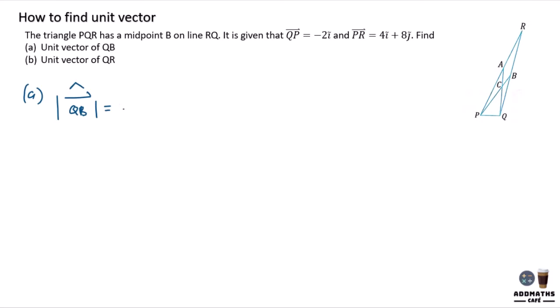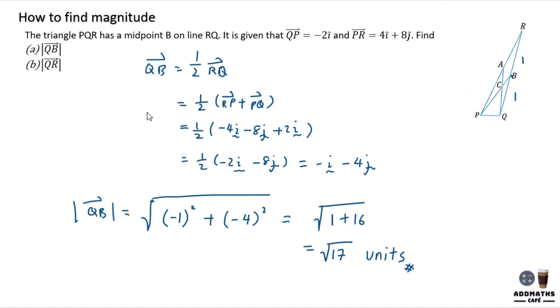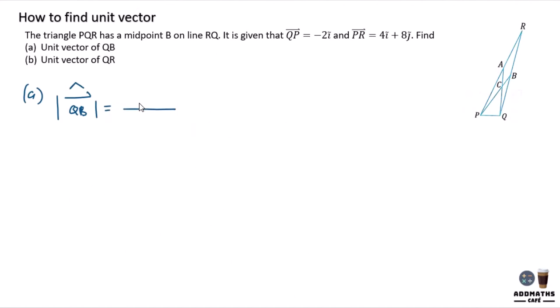So to find QB, below will be your magnitude. If you look back, the previous answer, QB is your square root of 17. So just write down square root of 17. And what is on the top will be the vector of QB.